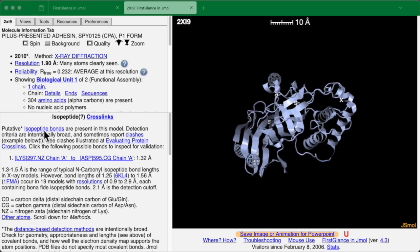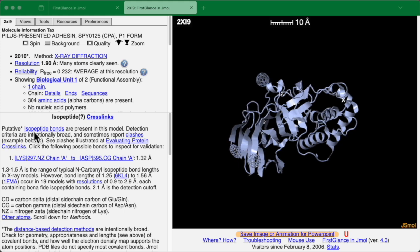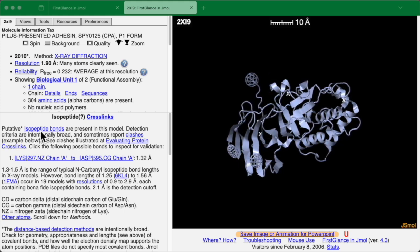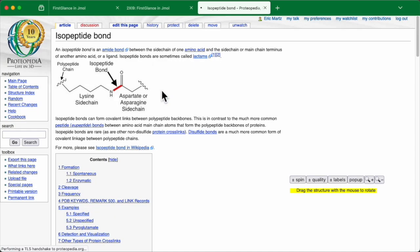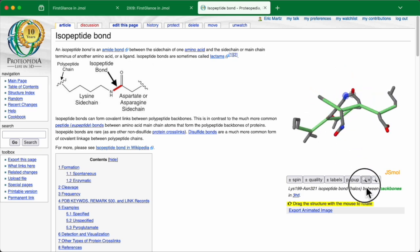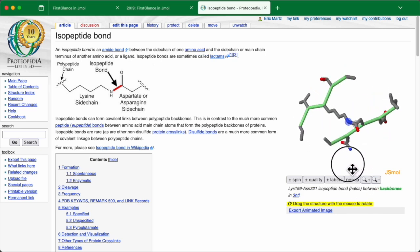If you'd like to review what an isopeptide bond is, click on this link here. This is typical of FirstGlance. There's a lot of explanatory information available. When you click on this, it goes to a Proteopedia page that shows you in chemical atomic detail what is an isopeptide bond and actually provides an interactive example over here.